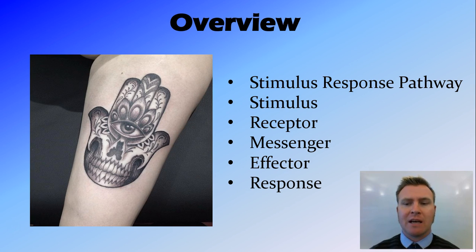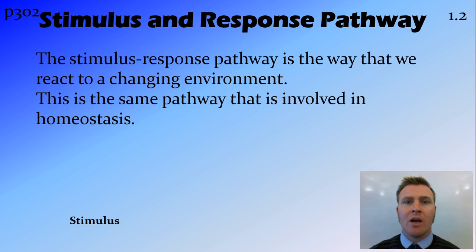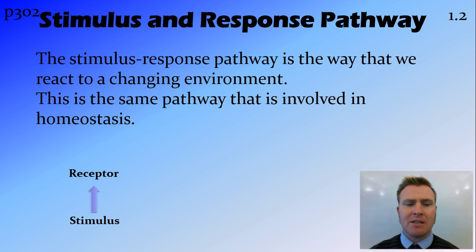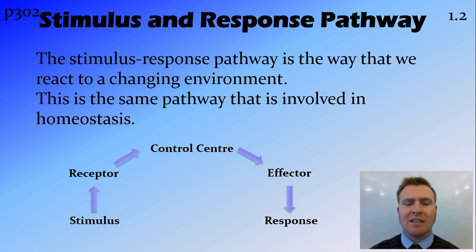You can go back and review those videos. The parts of the stimulus response pathway are the stimulus itself, the receptor, the messenger, the effector, and the response that it elicits. This is the same pathway involved in homeostasis — the stimulus is detected by the receptor, the message goes to a control center, the control center sends a message to the effector, and the effector elicits the response.